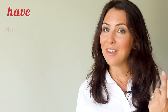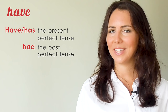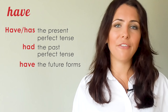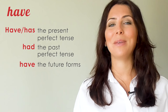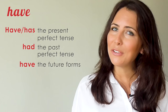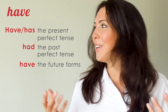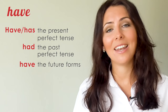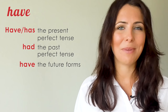Lastly, 'have.' Have is the auxiliary verb used in the perfect tenses — 'have' and 'has' in the present perfect tense, and 'had' in the past perfect tense. In the future forms, we use the infinitive 'have' with 'will' or 'going to.' The main verb in the perfect tenses is in past participle form, and the auxiliary verb 'have' is always going to be there helping out.